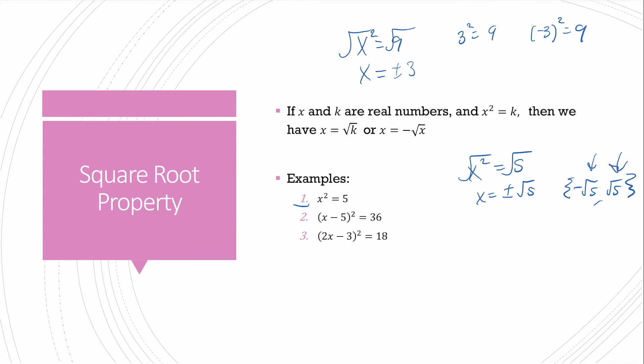Next, I've got x minus 5 squared equals 36. If I take the square root of both sides, that gives me x minus 5 equals plus or minus the square root of 36, which is 6. So I have x minus 5 equals 6 and x minus 5 equals negative 6. I solve both of these accordingly. So I get x equals 11 and x equals negative 1 as my solution set.